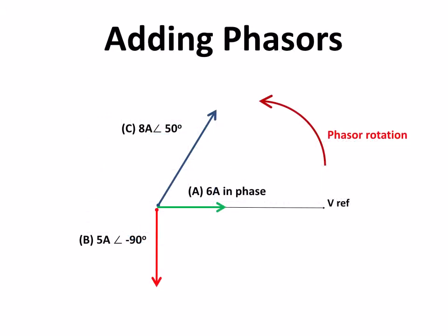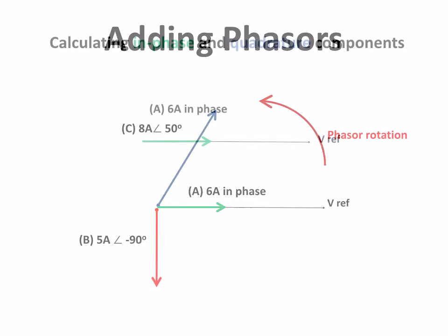Now we're going to look at the same calculation that we did graphically. We've got 6 amps in phase, 5 amps lagging by 90 degrees, and 8 amps at an angle of 50 degrees, and we're going to look at each phasor in turn.